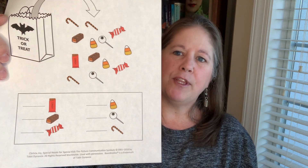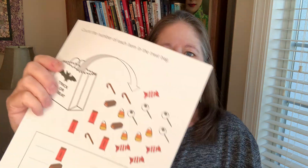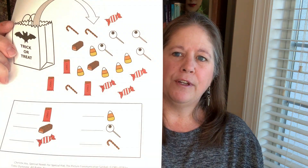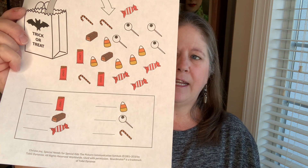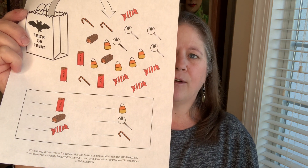I have this one that's a little easier, and this one has more candy to count — both of these are included. It does come in black and white as well, and there is a link to a digital version too.